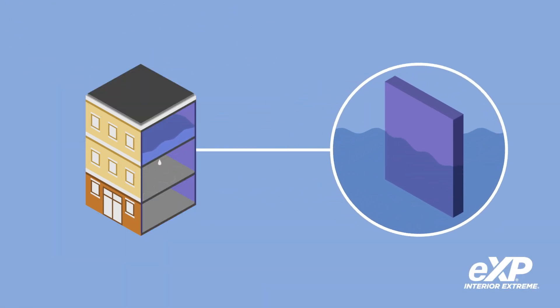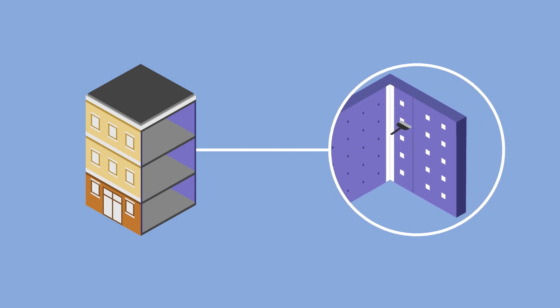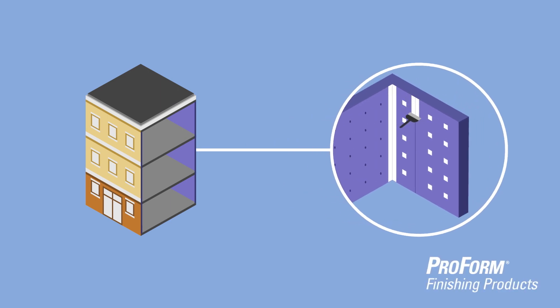Unexpected moisture issues, like sudden plumbing breaks, happen. EXP Interior Xtreme has the highest mold resistance score, and the mold and mildew resistance of ProForm joint compounds add a final layer of protection.